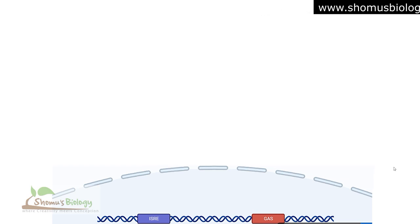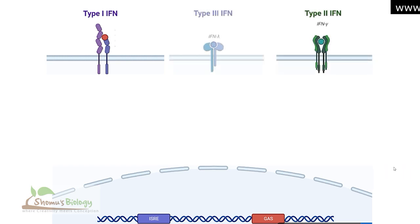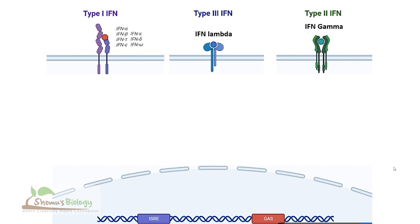In the cell membrane, we have type 1 interferon receptor, type 2 interferon receptor, and type 3 interferon receptor. The type 1 interferon receptor gets activated by interferon alpha, beta, delta, epsilon, omega, and many different types. Type 2 gets activated by interferon gamma, and type 3 gets activated by interferon lambda. The process of their activation is a little different.